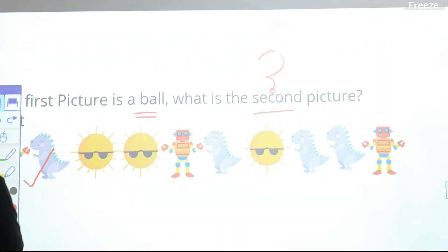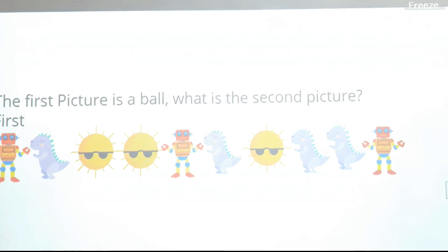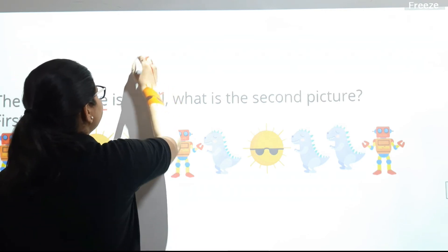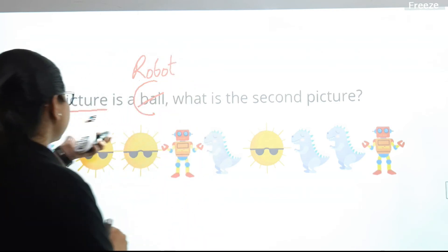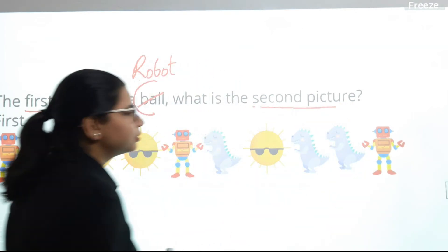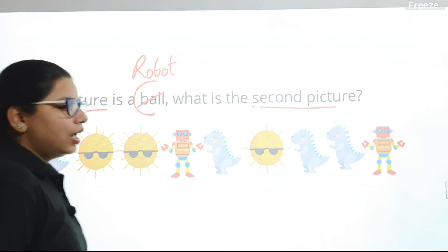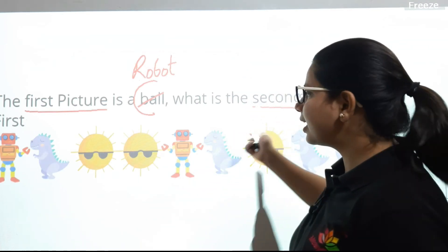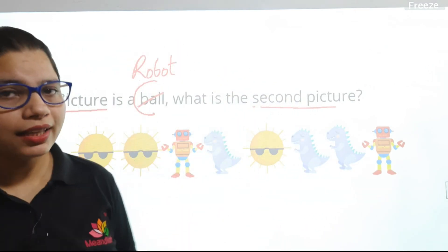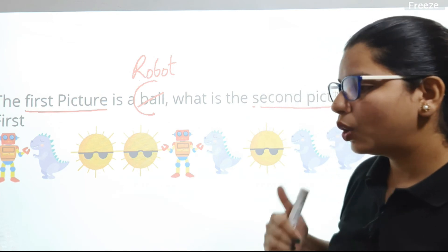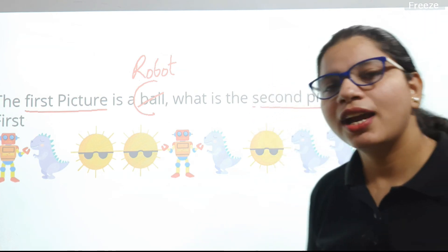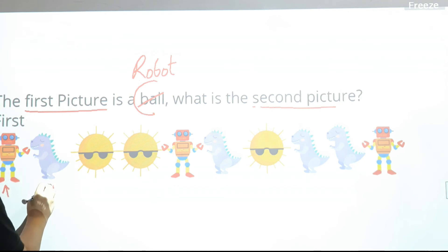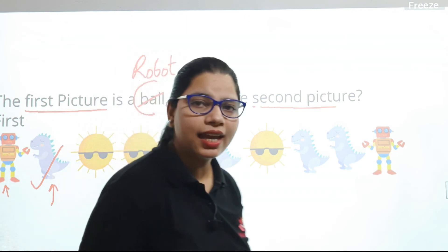Next question: the first picture is a robot. What is the second picture? I'll give you just five seconds — one, two, three, four, five. The second picture is a dinosaur. Very good!